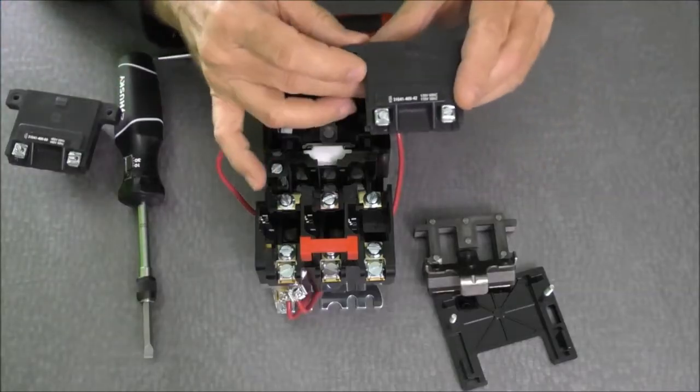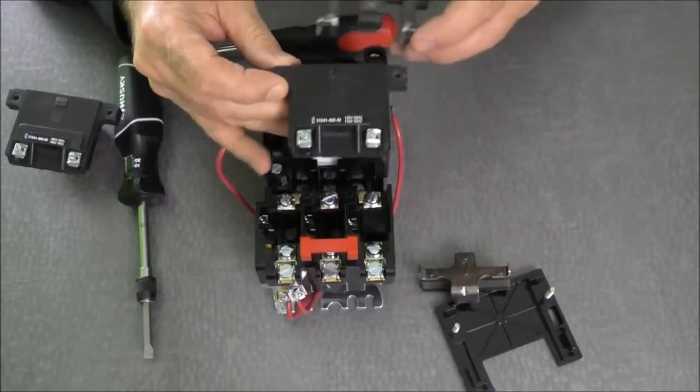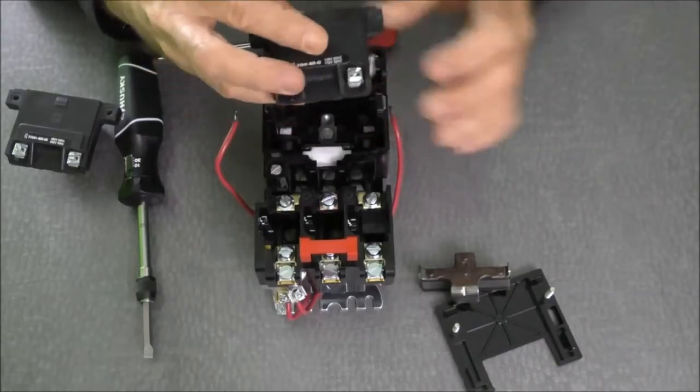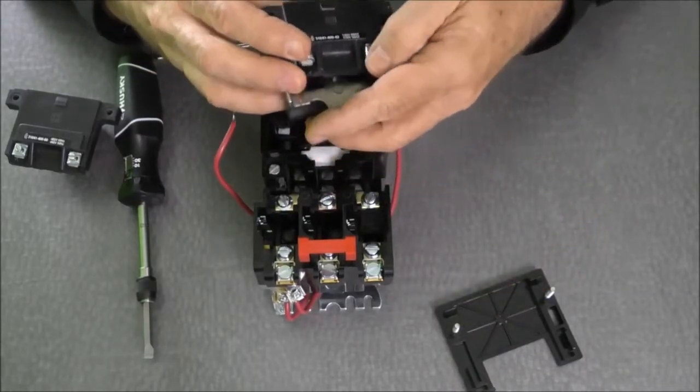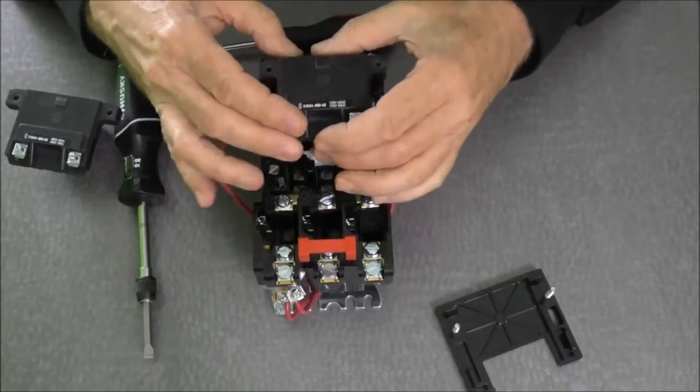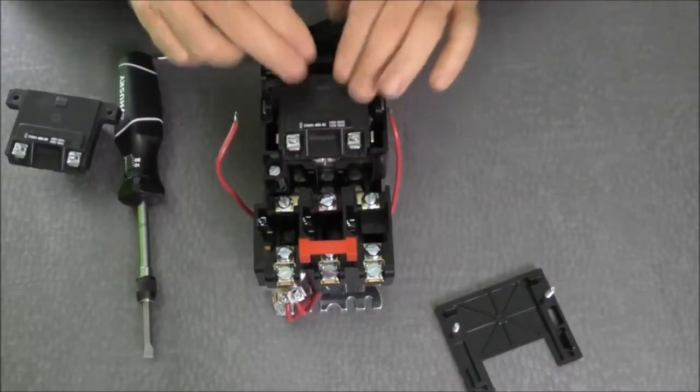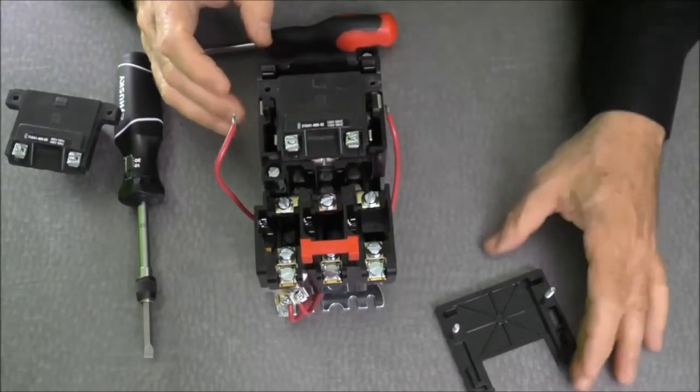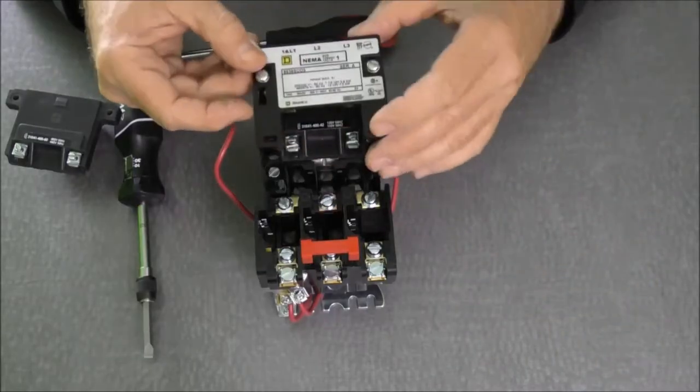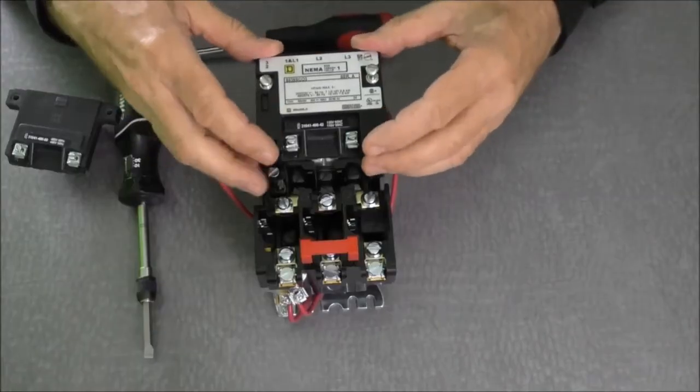I will then pick up my 120 volt coil, put in my magnet, put in my armature, slide it back into the starter itself. I can now take my cover plate and replace it on the contactor.